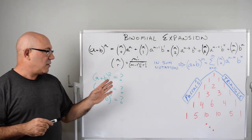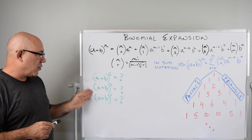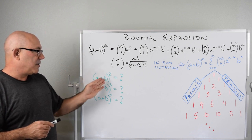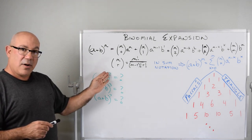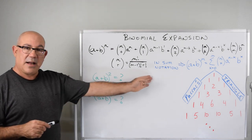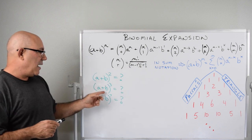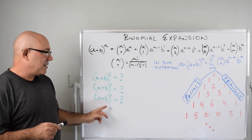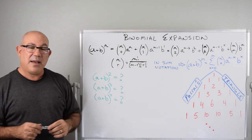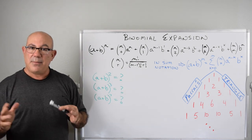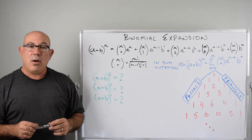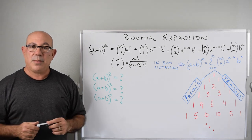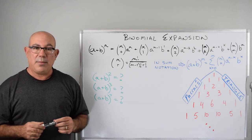We are going to look at solving three problems today: A plus B squared — how does that expand out? — A plus B cubed, and A plus B to the seventh. It's going to get pretty messy, but some of our tricks are going to help simplify it quite a bit.